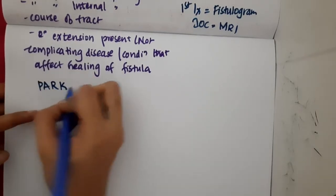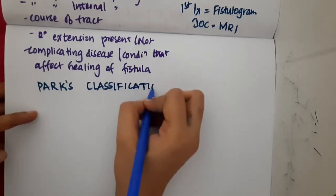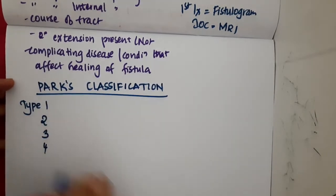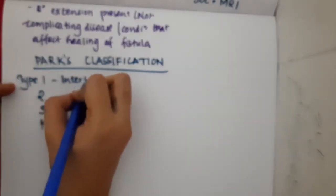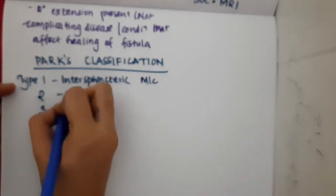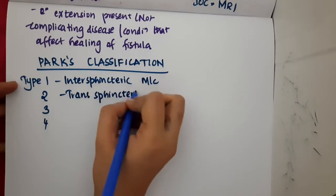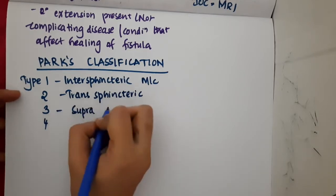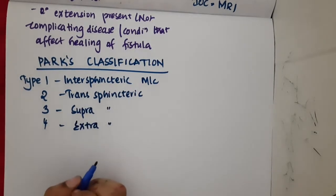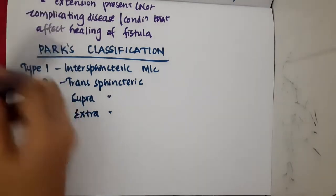In the Parks classification, there are four types. Type 1 is intersphincteric fistula, which is the most common. Type 2 is transsphincteric fistula. Type 3 is suprasphincteric fistula. Type 4 is extrasphincteric fistula.